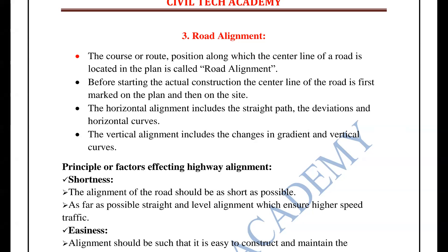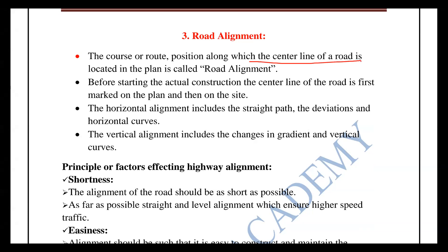First, road alignment is the center line of the road, located in a plan. We are going to fix the center line of the road. Before starting the construction, we are going to construct the road — and the first step is to mark the center line.